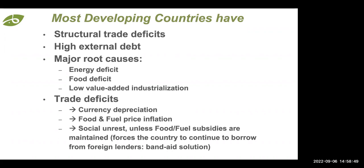These structural trade deficits put downward pressure on currency value relative to the dollar. With a weaker currency, everything imported becomes more expensive — you're literally importing inflation. This becomes dangerous when importing basic necessities like food, fuel, or medicine, creating the potential for social unrest. Food and fuel subsidies are introduced as a band-aid, forcing the country to borrow foreign currency to artificially sustain a fixed exchange rate — which is why we frequently see food riots and inflation-related social and political unrest, as in Sri Lanka, Tunisia, and Lebanon.